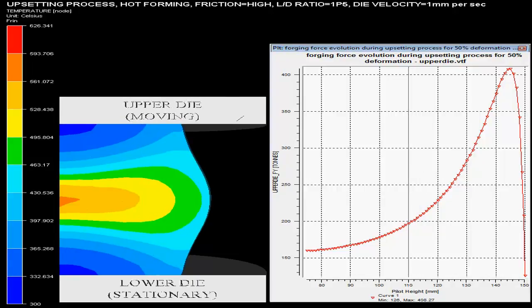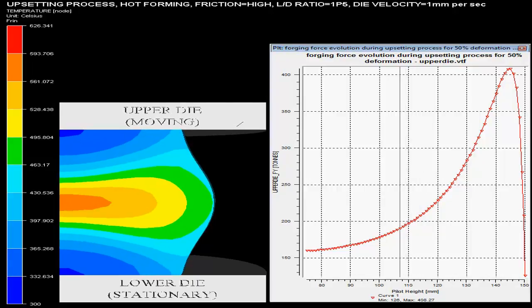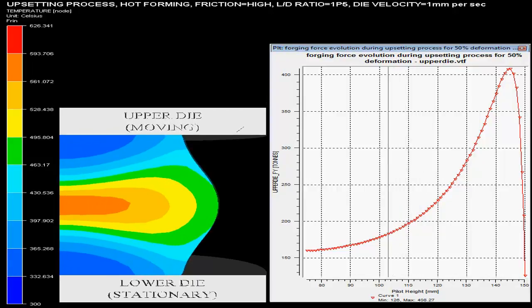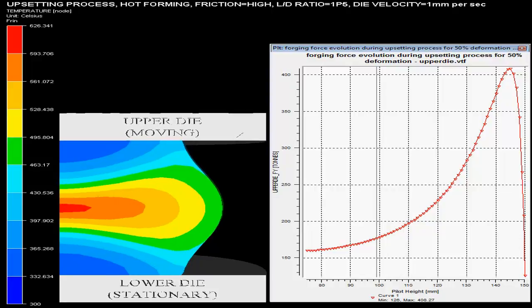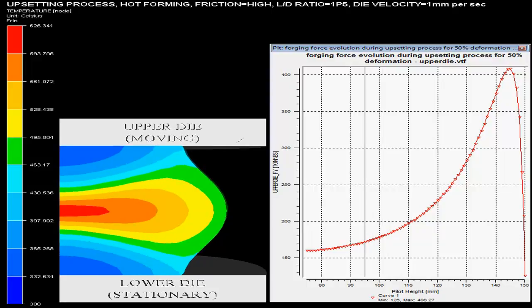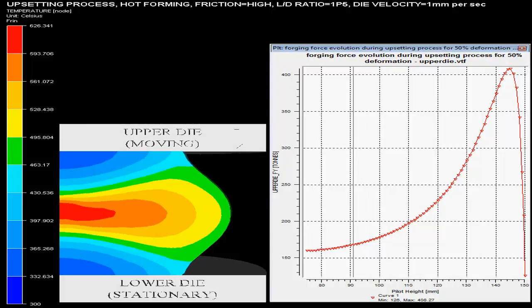The graph on the right side shows the evolution of the forging force with pilot height of the punch. The maximum forging force required here is 408.27 tons.